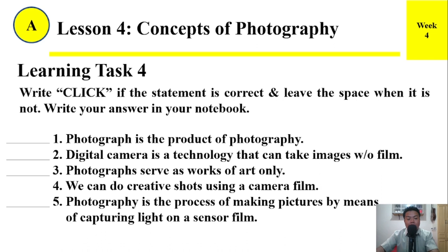Learning Task Number Four: Write a check if the statement is correct and leave the space blank when it is not. Write your answer in your notebook. Number one: Photograph is the product of photography. Number two: Digital camera is a technology that can take images without film. Number three: Photographs serve as a work of art only. Number four: We can do creative shots using a film camera. Number five: Photography is the process of making pictures by means of capturing light on a sensor or film.